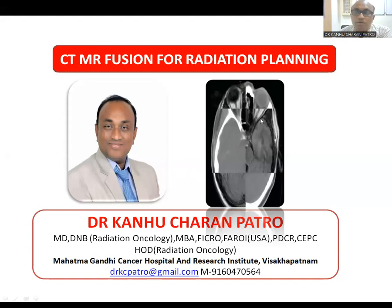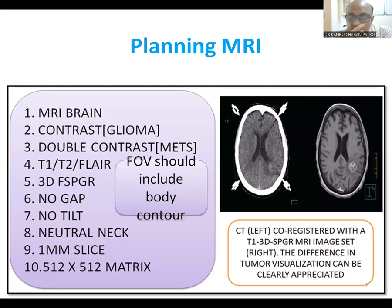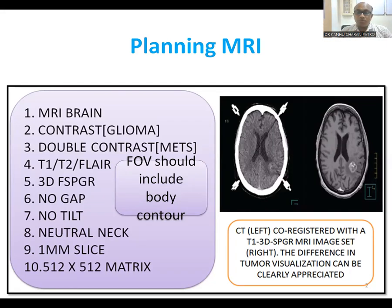Before going for the fusion, your CT and MR should be in the same sigma slice, same sequence. For planning MRI, you should ask for an MRI brain contrast, double contrast, T1, T2, 3D FSPGR sequence, no gap, no tilt, neutral neck, 1mm slice, and a 512 matrix. The field of view should include from the vertex to the tip of the nose, including C2, and the external bony prominences, for proper fusion. This is called true FOV. You should go for 1mm slice and full FOV for the fusion, which I will tell you in the practical demonstration.